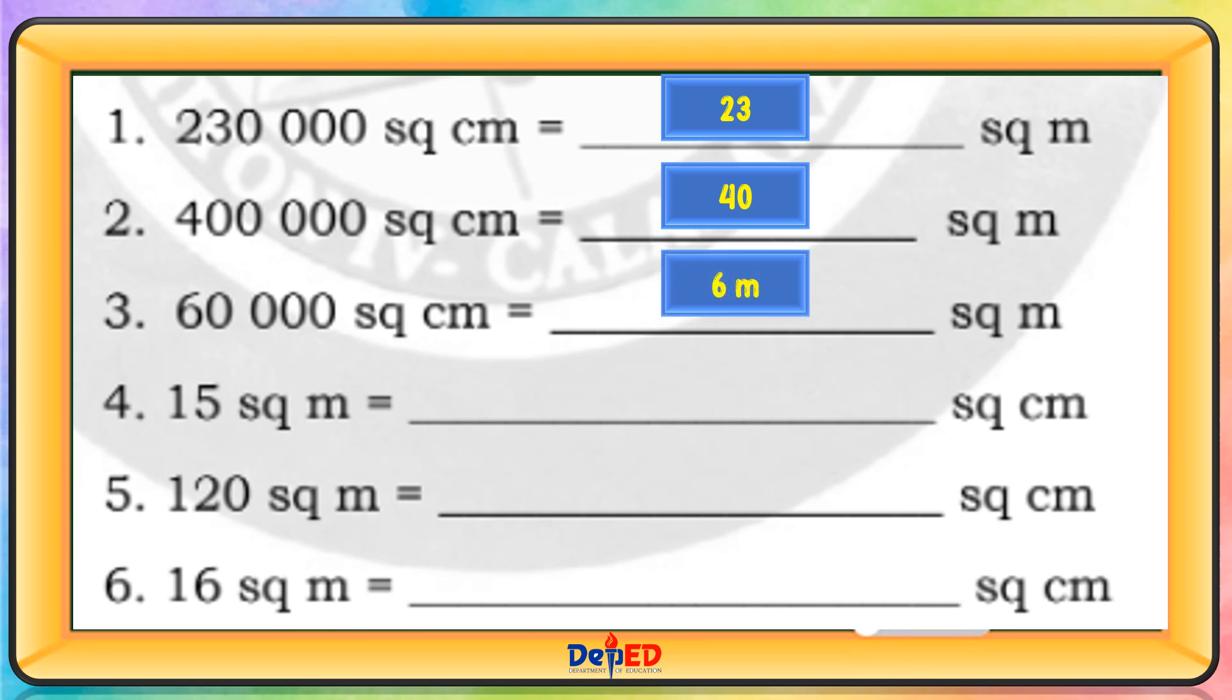15 square meters is equals to 150 square centimeters. 120 square meters is equals to 1 million 200,000 square centimeters. 16 square meters is equals to 160,000 square centimeters.